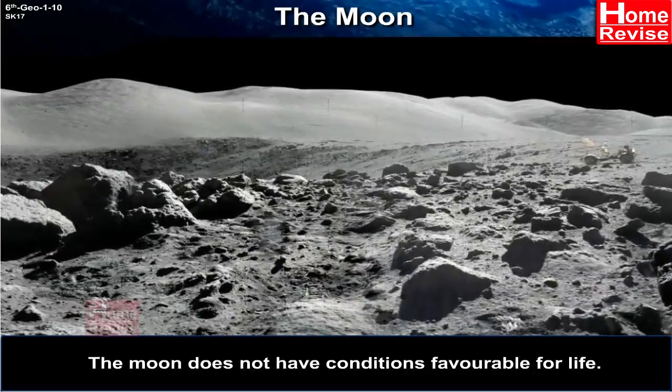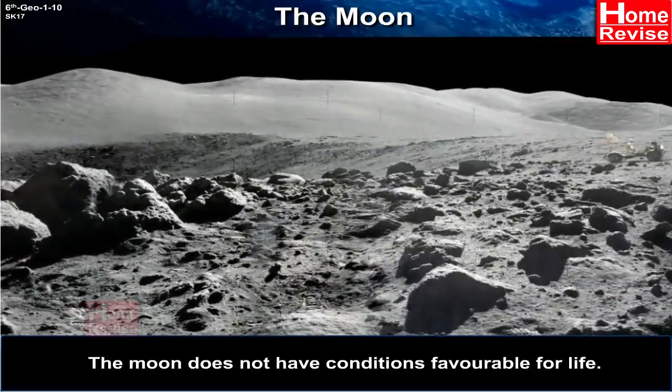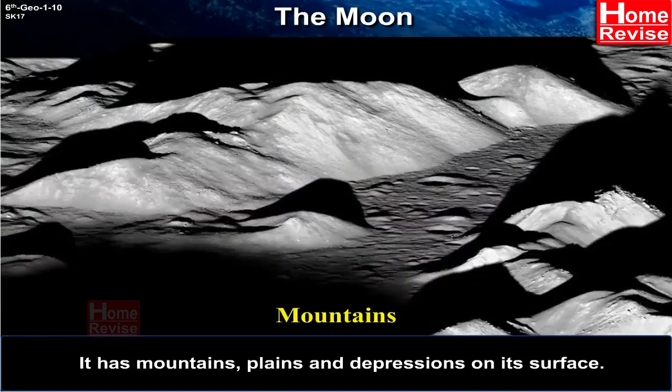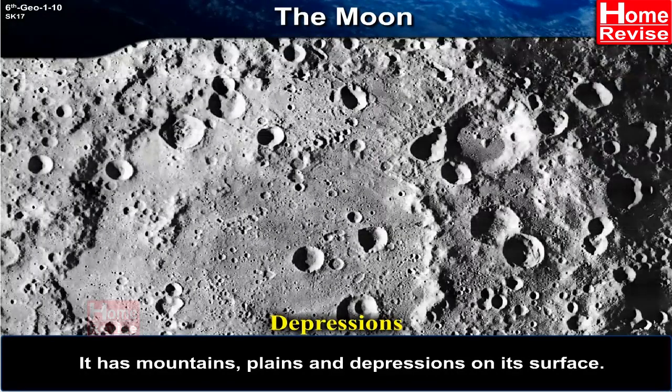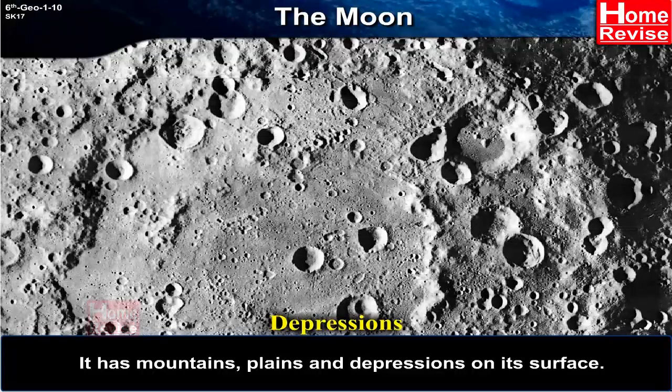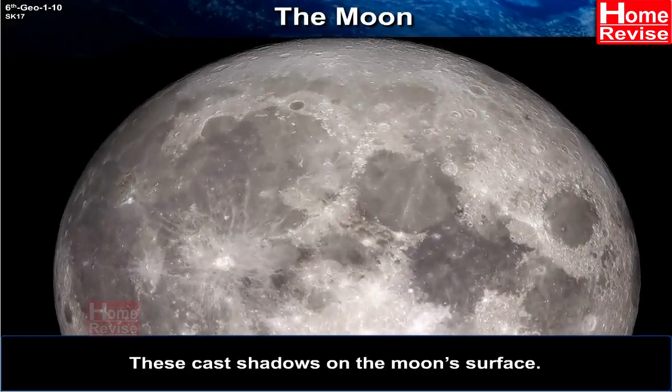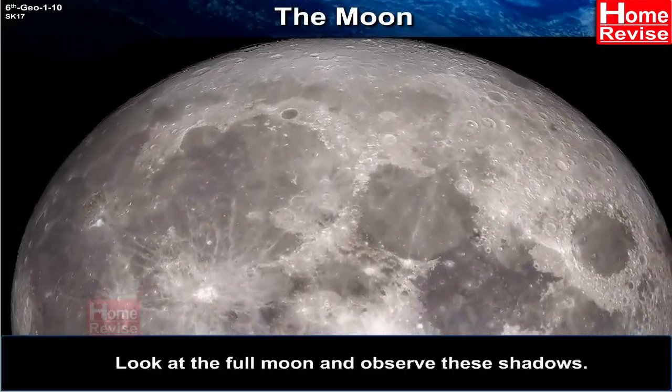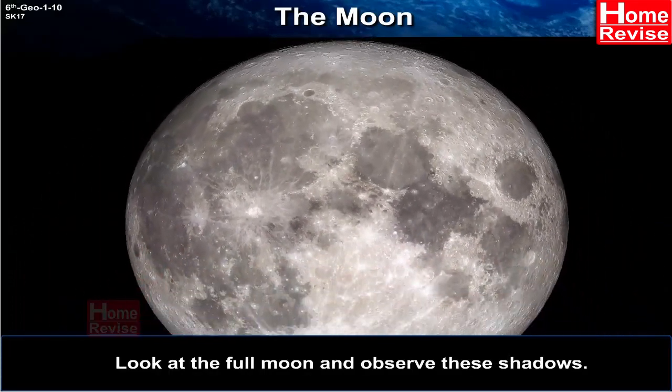The Moon does not have conditions favourable for life. It has mountains, plains and depressions on its surface. These cast shadows on the Moon's surface. Look at the full Moon and observe these shadows.